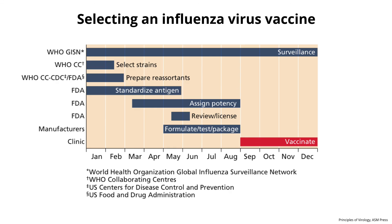WHO starts in January by looking at all the data collected for the previous months — what strains are circulating, how they react with antibodies. By February, they have to say these are going to be the components of this season's vaccine. They make reassortants with the egg high-yielding strain, do standardization and potency tests, and by September you have the vaccine produced. You can't have it before then because this whole process takes a long time. Typically you start immunizing people for the winter when flu begins in November or December. This is a really long, expensive process that needs to be revised.